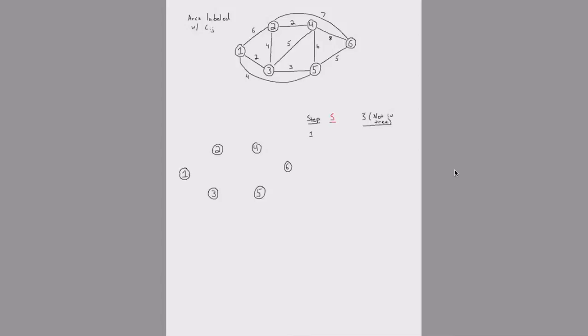What Prim's algorithm maintains at each iteration is a set of nodes that are in the tree, called S, and a set of nodes not in the tree, called S-bar. These two sets cut the network into two distinct sets. We look at all the arcs going from set S to set S-bar and simply choose the arc that spans this cut that is the cheapest. We're focusing on the arcs in the cut, not distance labels.